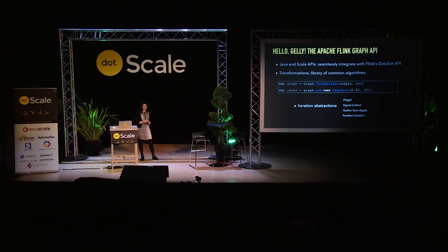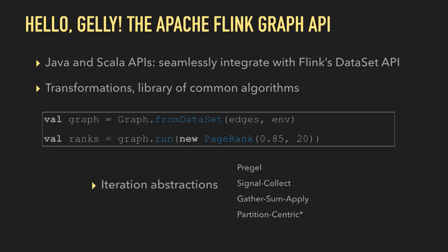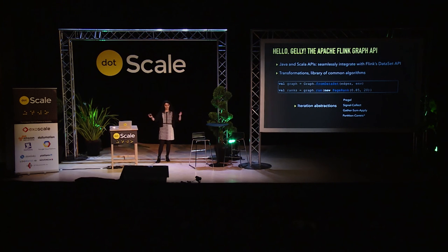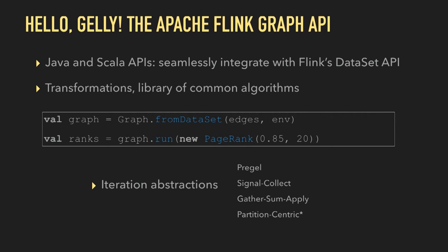Say hello to Gelly. Gelly is the Apache Flink Graph API. We have Java and Scala APIs, and we can seamlessly integrate with the Flink dataset API. You can build really long data processing pipelines where graph processing is just one step of your program. Gelly has utilities for graph transformations and has a library of common algorithms so you don't have to write them yourself. You can see a taste of the Scala API on screen. It offers several iteration abstractions: a Pregel abstraction (think like a vertex), a Signal Collect abstraction, a gather-sum-apply abstraction, and a proof-of-concept implementation for partition-centric abstraction.